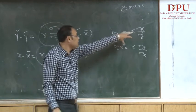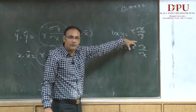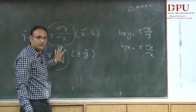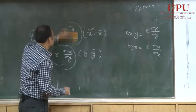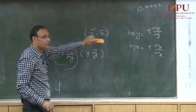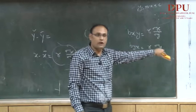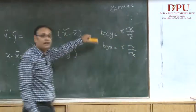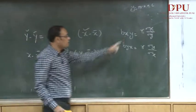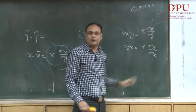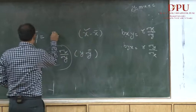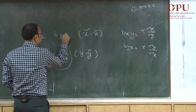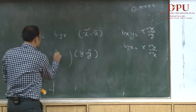We can substitute bxy in place of r·σx/σy. Sometimes if they give the regression coefficient of x on y or y on x, these values are directly given and you just substitute them. So byx and bxy are these simplified forms.